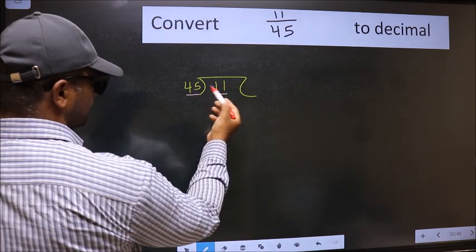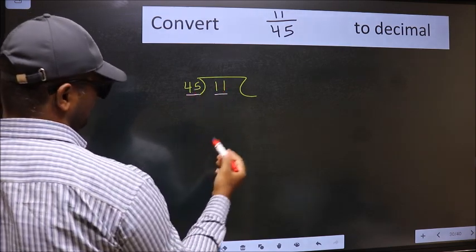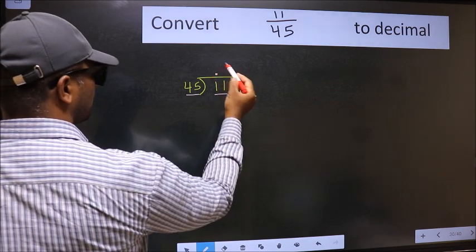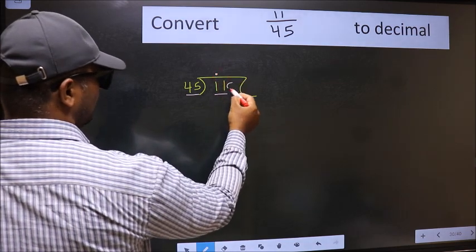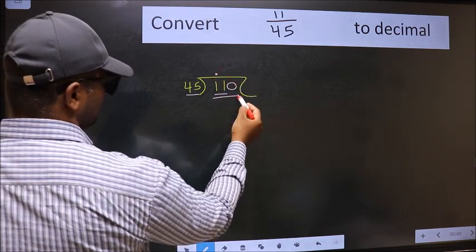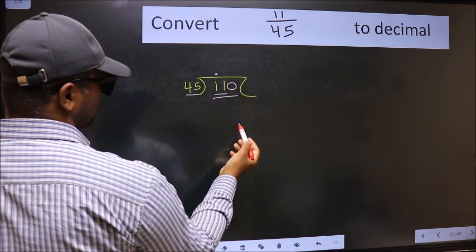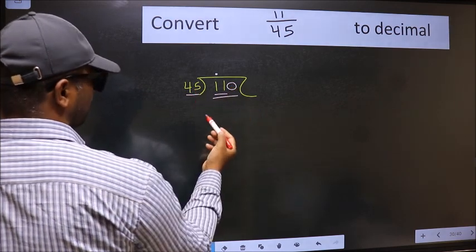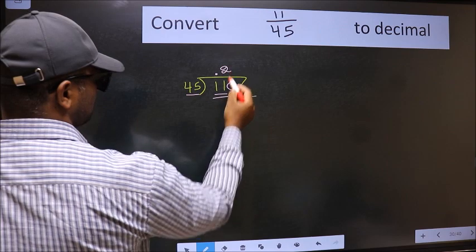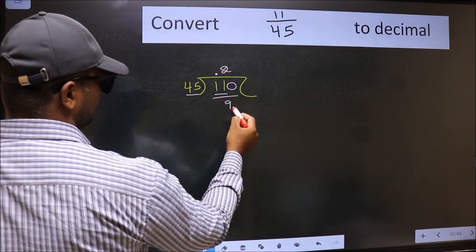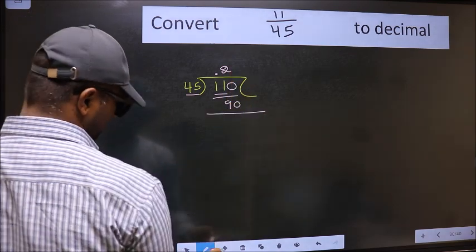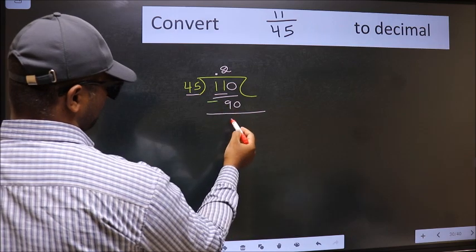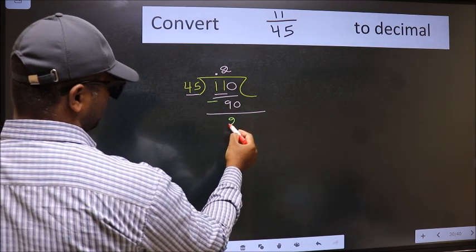11 is smaller than 45. So what we should do is put a dot and take 0. So, 110. A number close to 110 in the 45 table is 45 times 2, which is 90. Now we should subtract. We get 20.